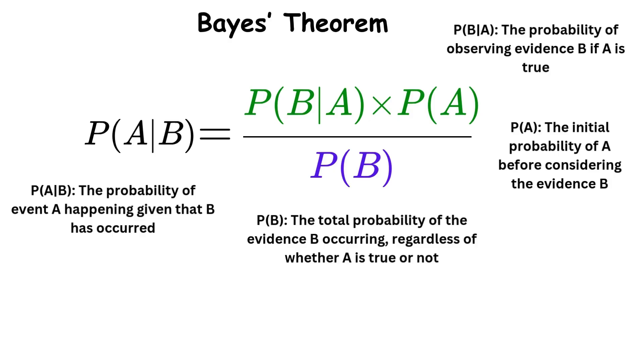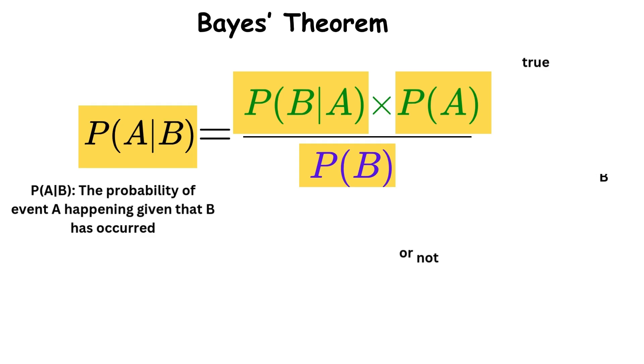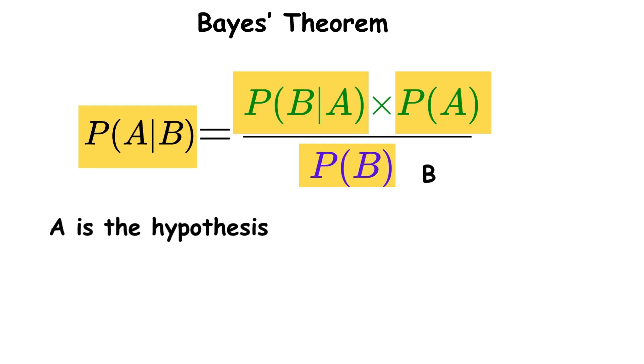In mathematical terms, the probability of A given B equals the probability of B given A, multiplied by the probability of A, divided by the probability of B, where A is the hypothesis and B is the evidence.